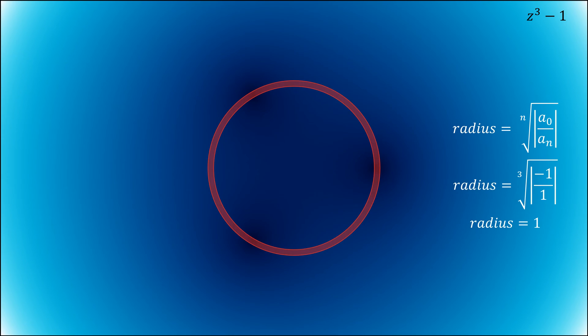Let's figure out the starting points for this function, z cubed minus 1. Using Ehrlich's equation, we come up with a radius of 1, so we draw a circle, and evenly distribute our points.